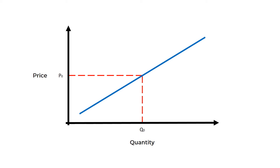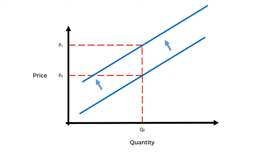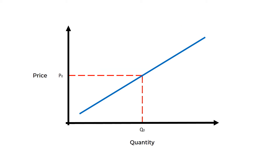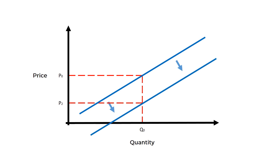Now let's look at shifts in the whole supply curve. If we reduce supply — an upward shift in the supply curve — for the same quantity the price will increase from p0 to p1. If we increase supply — a downward shift in supply — the price will fall from p0 to p2 for the same quantity.